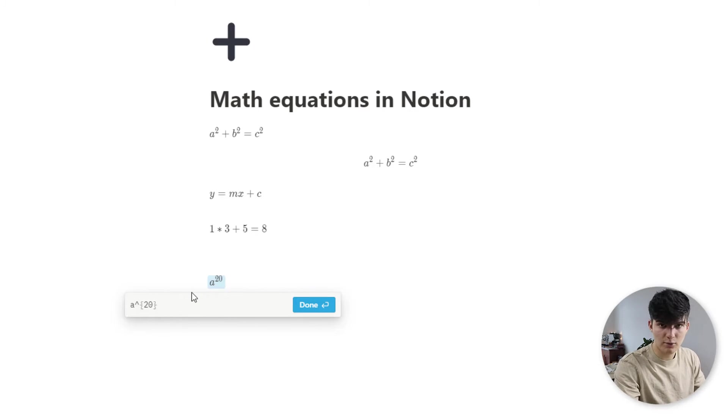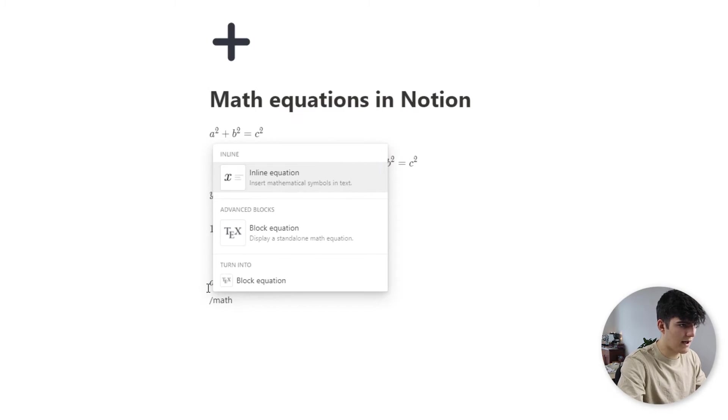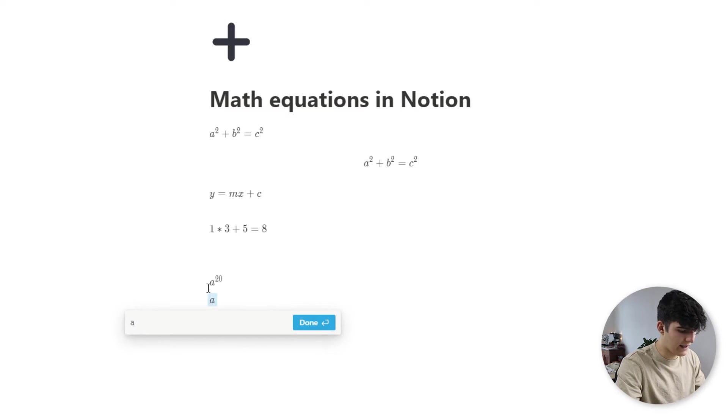Now, the same also works for subscript. So this is pretty much just the other way around. Let's add another math block. And let's say A, and then you do this underscore. And then again, you could say two. And then this is how it looks in Notion.